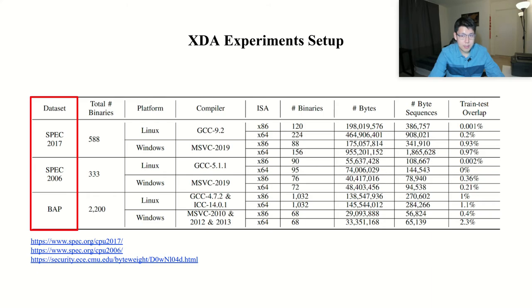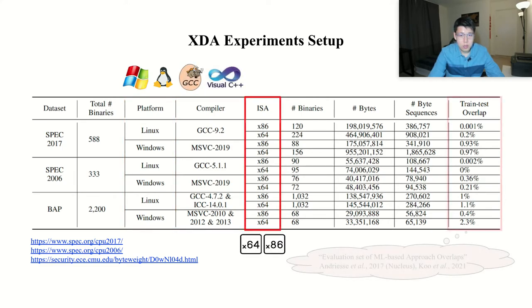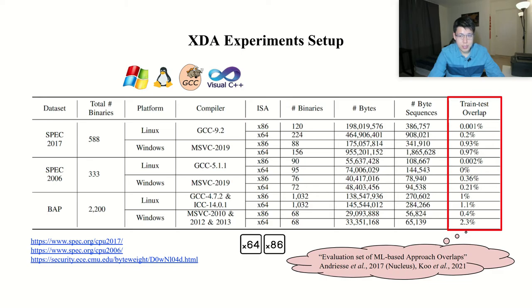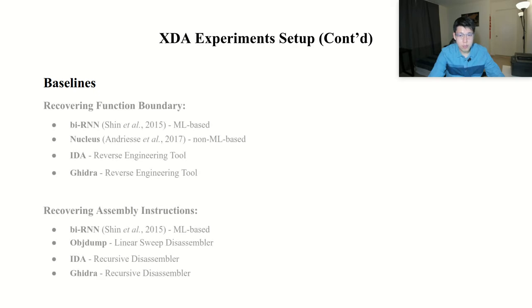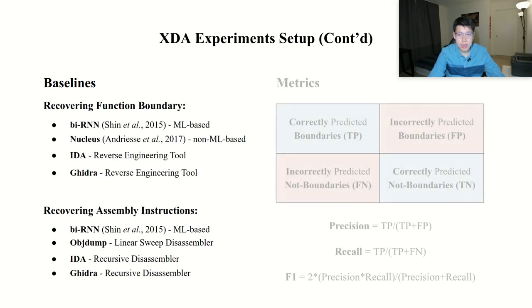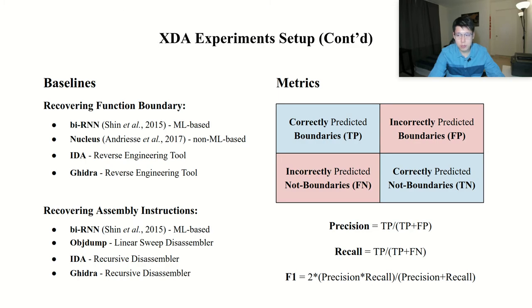We collect extensive datasets to evaluate XDA from different operating systems, compilers, and architectures. We also keep our training and testing overlapping rate minimum. This is to address the concern raised by the study of Andrews et al., where the evaluation set of previous ML-based approaches has high training and testing overlapping rate. We compare XDA to five representative baselines and use precision, recall, and F1 score to evaluate the prediction performance. These metrics make more sense than the accuracy as the label distribution of both tasks is highly unbalanced. The number of boundaries is much smaller than that of non-boundaries.